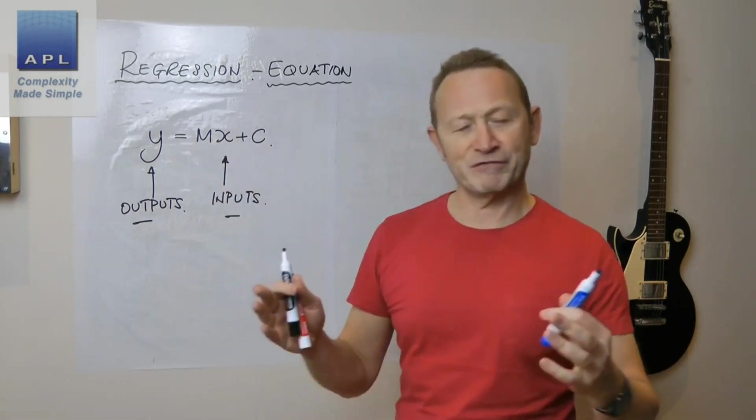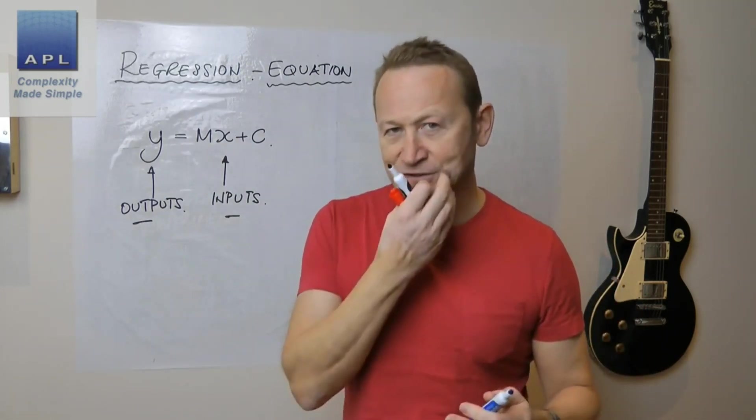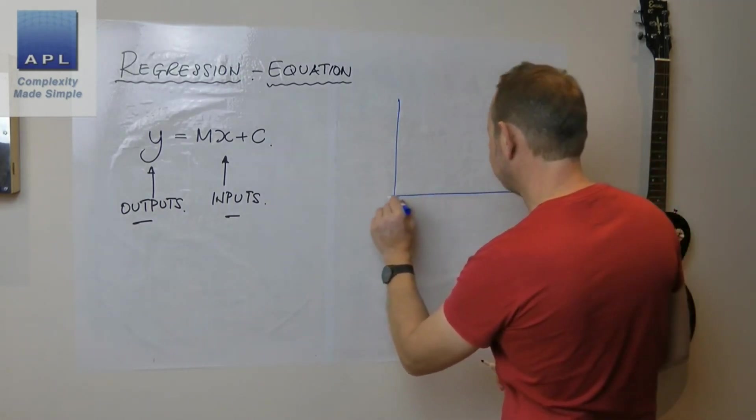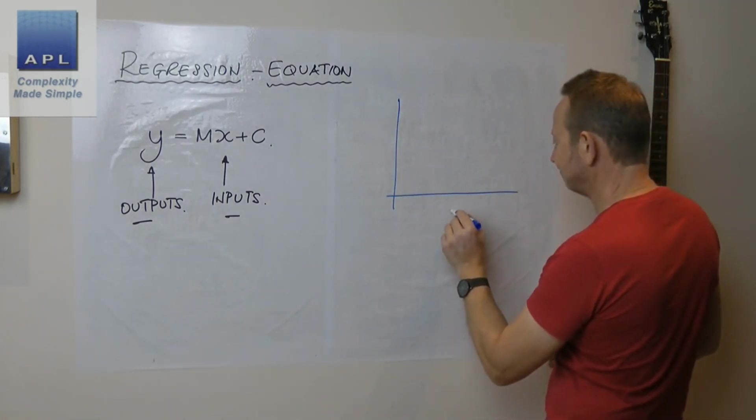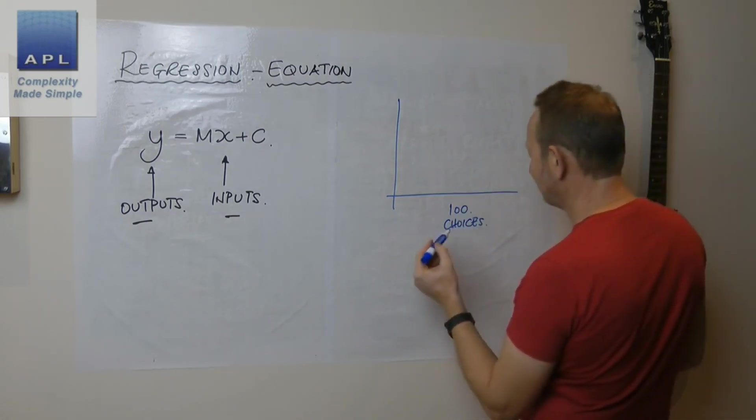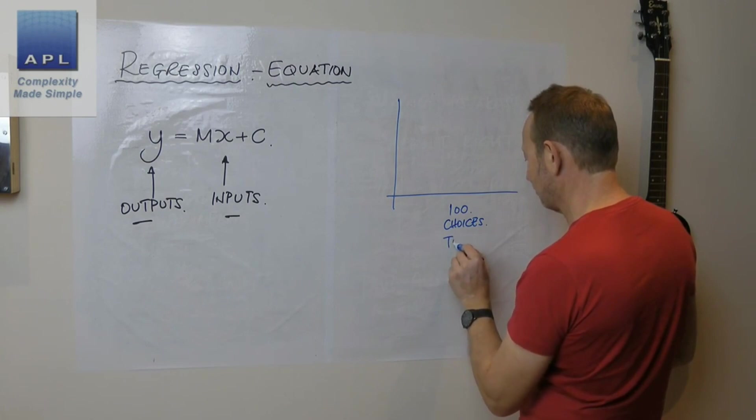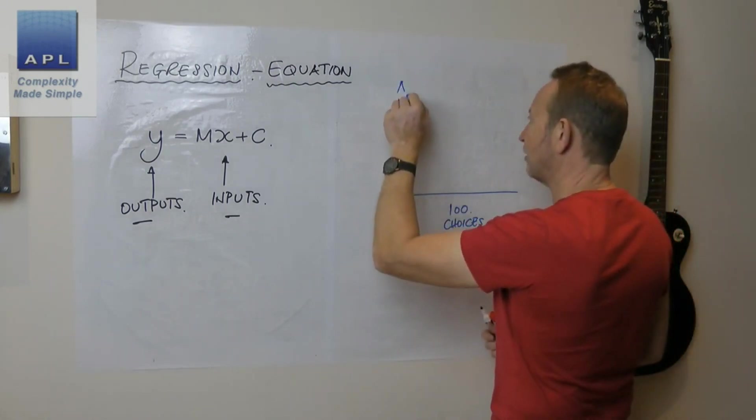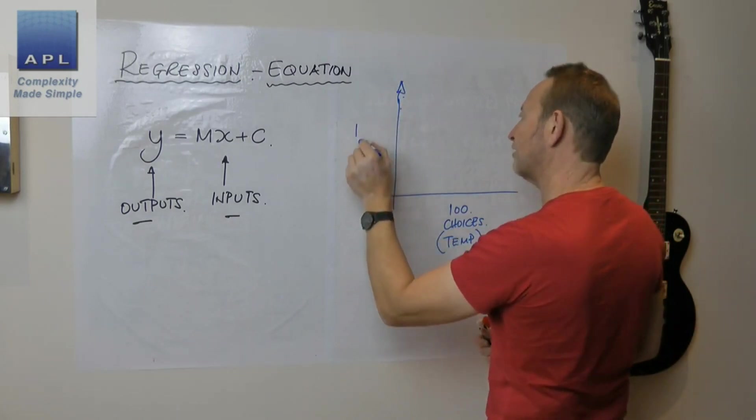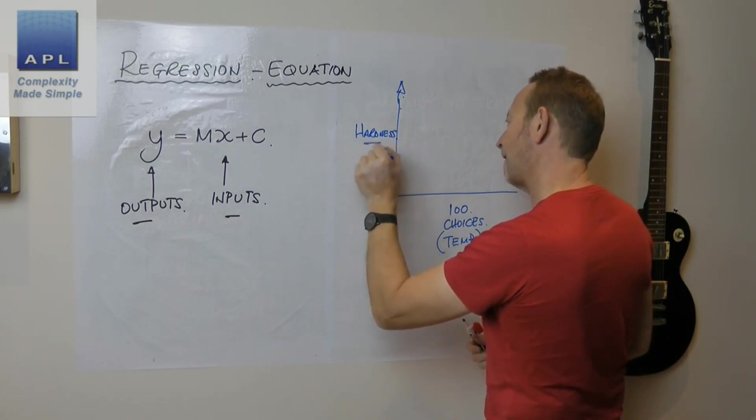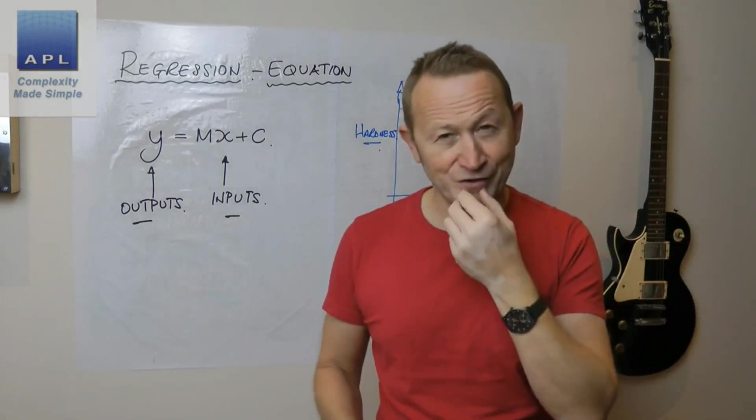But think about the power of this over and above experience. Let's say you have a variable which you can adjust, and I'm going to suggest there's a scale with a hundred choices. Let's say this is temperature. You're going to use temperature and you'd like to know the effect of temperature on the hardness of the material that you're manufacturing or producing.